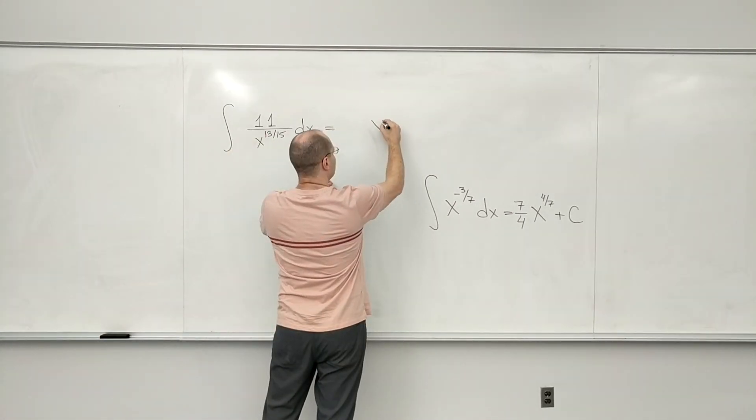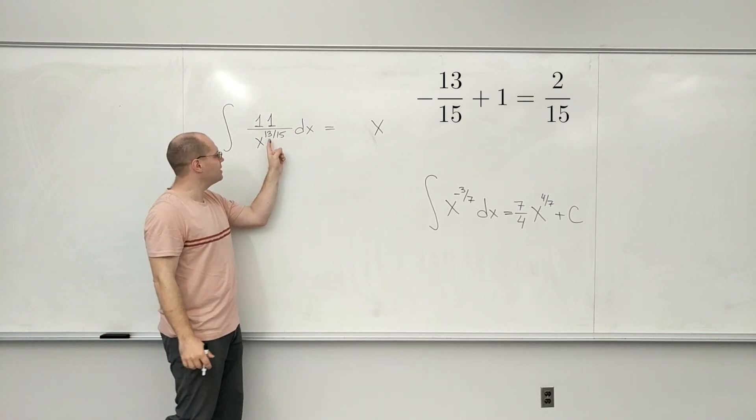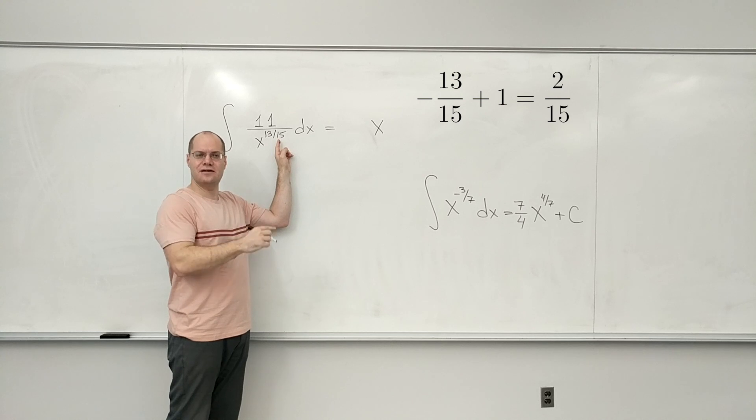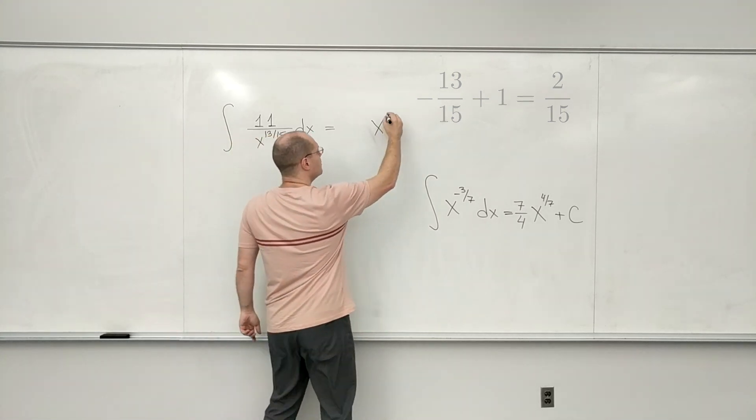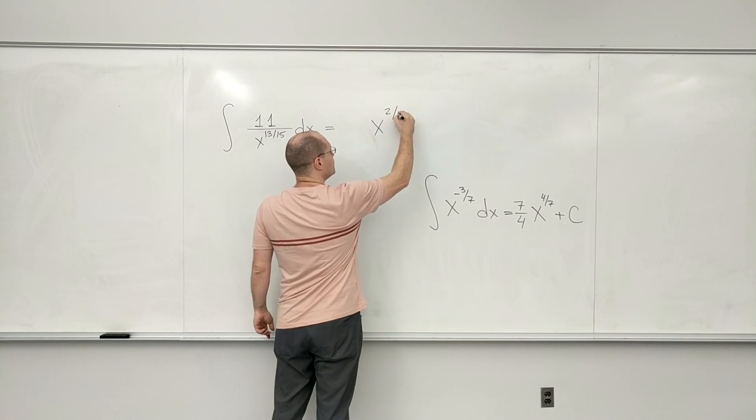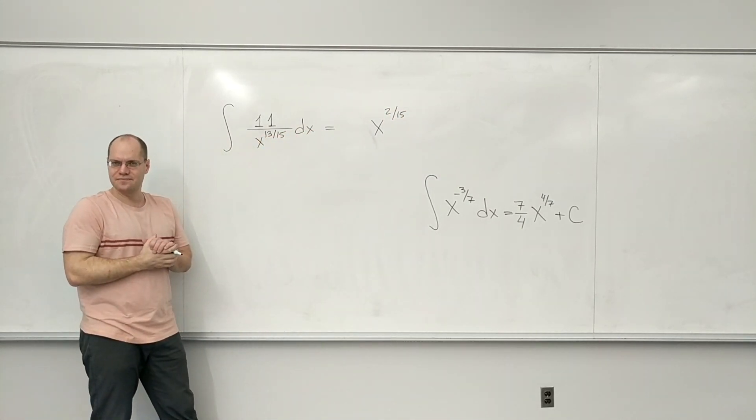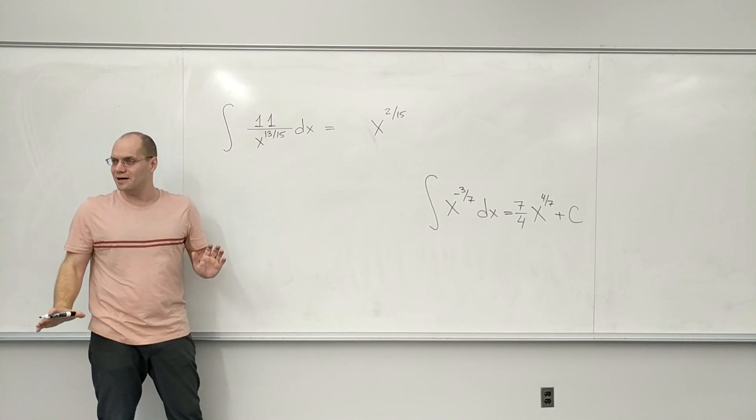I'll know that it must have come from X to the 2/15th. This is me adding 1 to minus 13/15. Minus 13/15 plus 1 is 2/15, so it came from 2/15th. And at this point I know I got the power right, so I won't worry about it anymore.